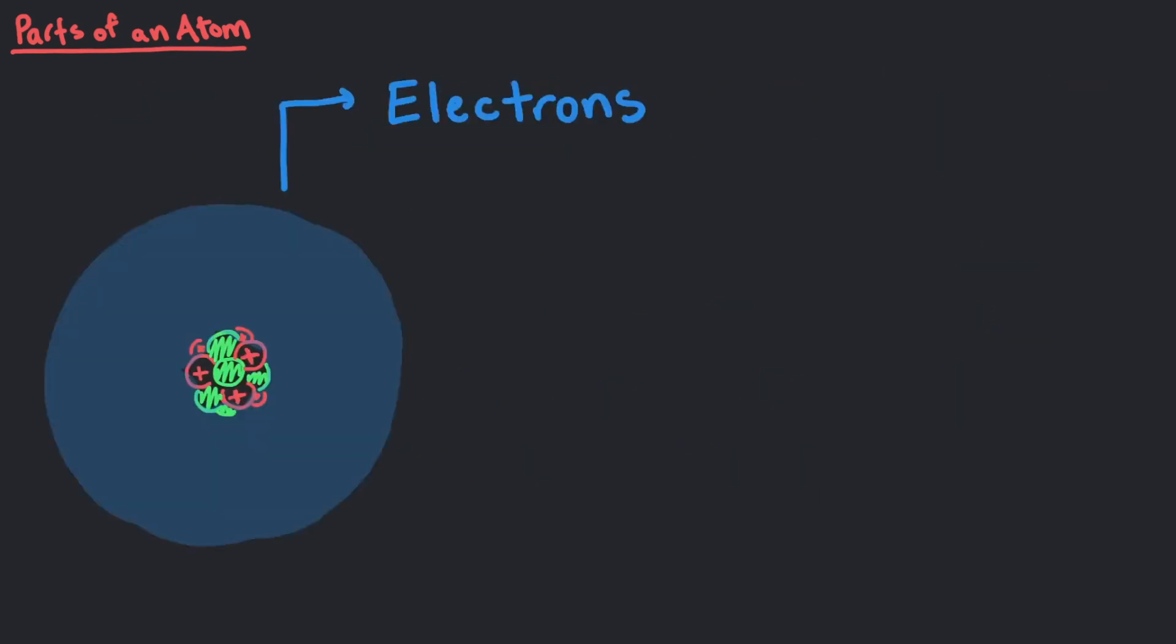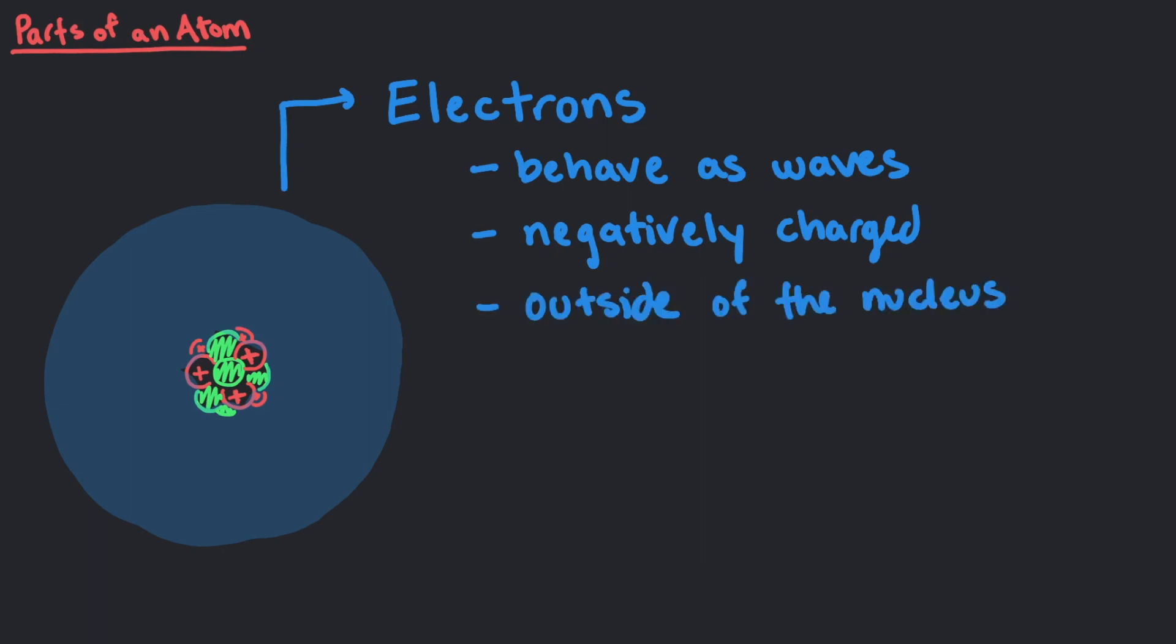Finally, electrons. There has been a lot of controversy about the nature of electrons over the last 150 years. We'll leave most of that for another video, but for now let's just say that electrons and atoms behave as waves that are negatively charged and are found in the parts of the atom outside of the nucleus. The nature of these electron waves and how they explain the chemistry of atoms is a topic for another time.